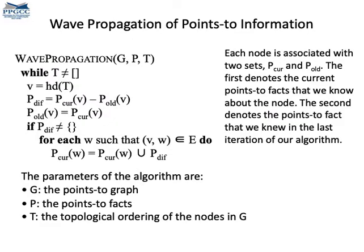This is the algorithm that propagates information. Information is propagated in a topological ordering of the graph. Thus, each node is guaranteed to be visited only once. And the algorithm uses a cache to avoid having to propagate data that has already been dealt with before. You can stop the video and read the algorithm at this point, if you want to understand it.